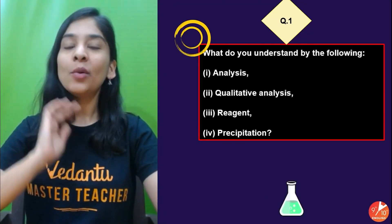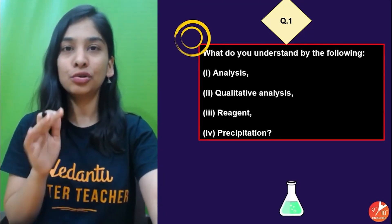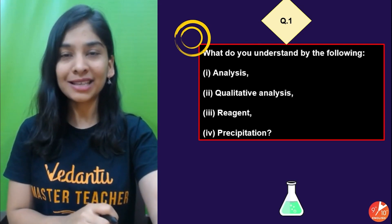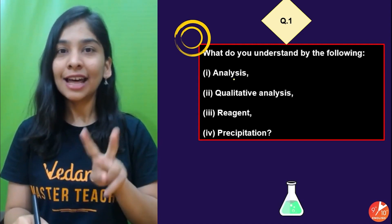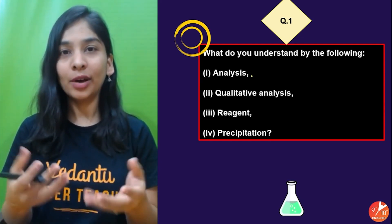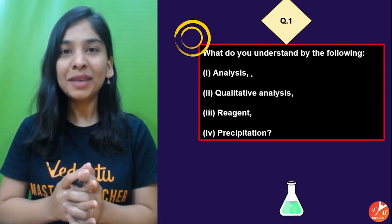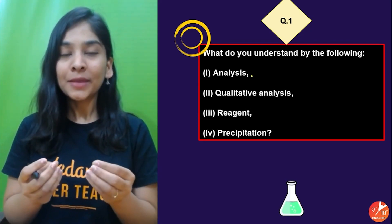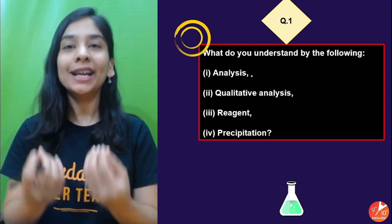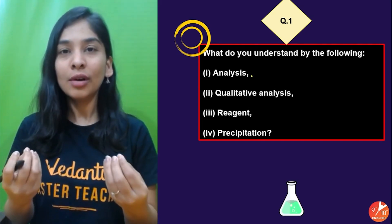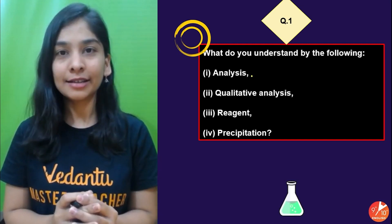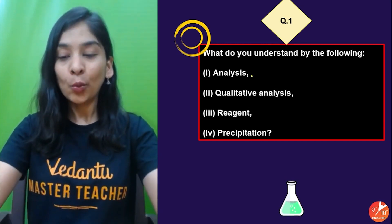Question number one: What do you understand by the following terms — analysis, qualitative analysis, reagent, and precipitation? Analysis is of two types: qualitative and quantitative. Analysis means we examine what components are present in a particular substance and identify them — to know their nature and composition.